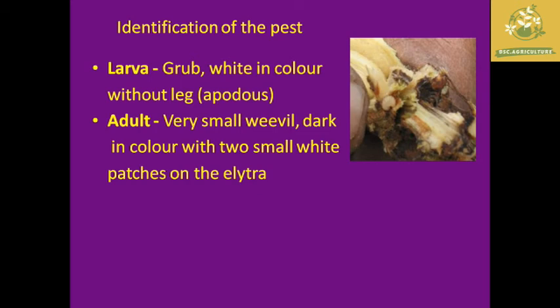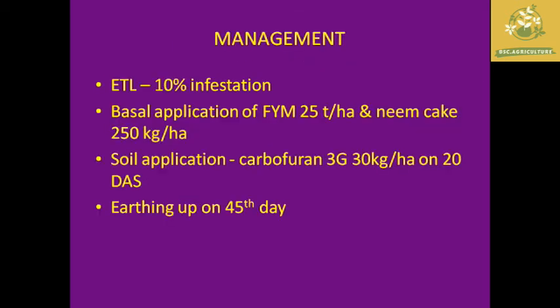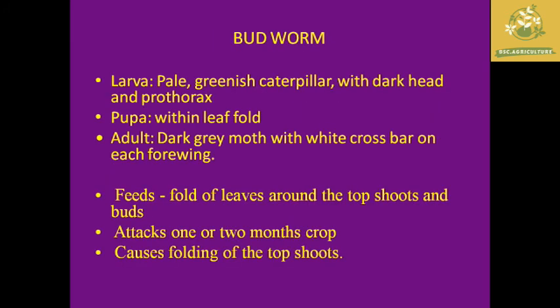For stem weevil identification: the larva is grub-white in color; the adult is a very small weevil, dark in color with two small white patches on the elytra. Management: if infestation exceeds the ETL of 10%, apply FYM at 25 tons per hectare or neem cake at 250 kg per hectare. Chemical application: Carbofuran 3G at 30 kg per hectare as a soil application at 20 days after planting, and earthing up at 45 days after planting is also effective.